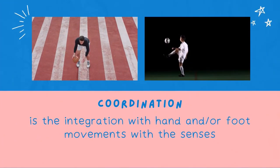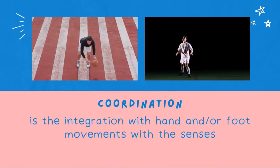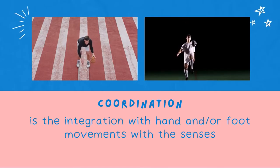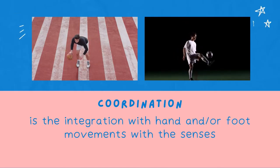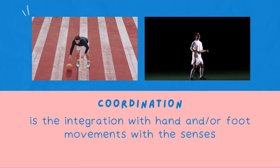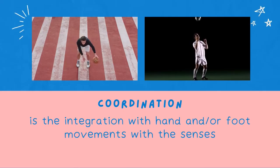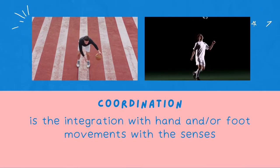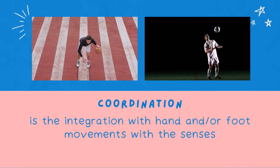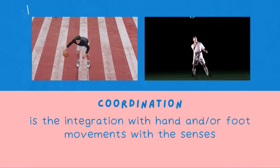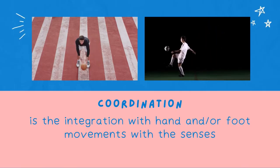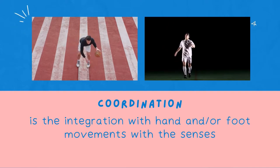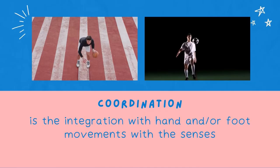Another component is coordination. It is the ability to coordinate two or more body parts together. An example is dribbling in football or basketball, where players use their hands and feet to dribble the ball — coordinating different body parts simultaneously.